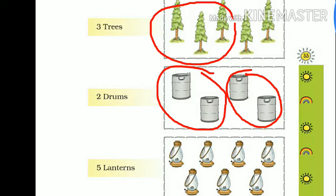In the next question, we have some lanterns and here it is written you have to make a group of 5. So let's count: 1, 2, 3, 4, 5. Let's make a group of 5. As you can see, 2 are left. So we can't make a group of 5 with these 2 lanterns. So here we can make only 1 group.